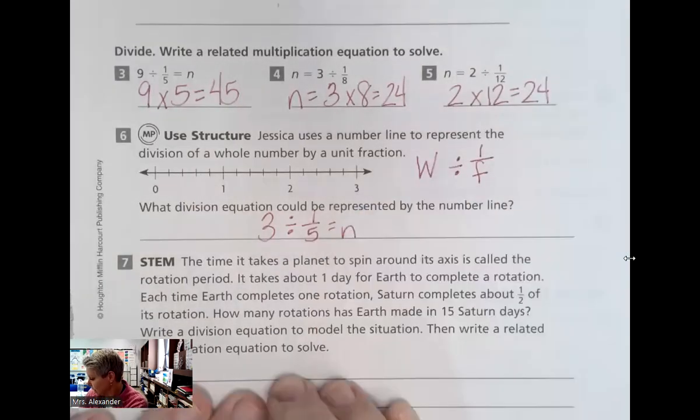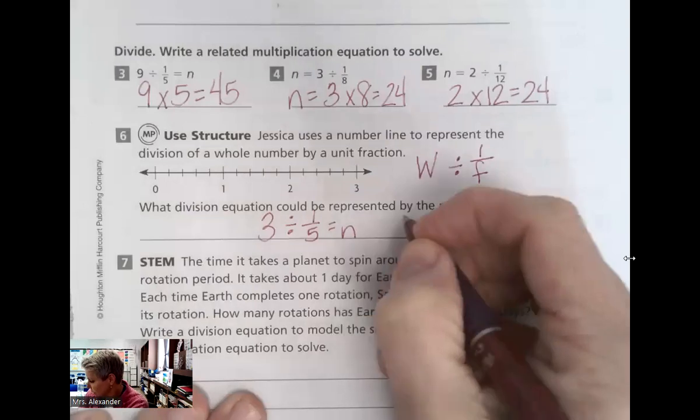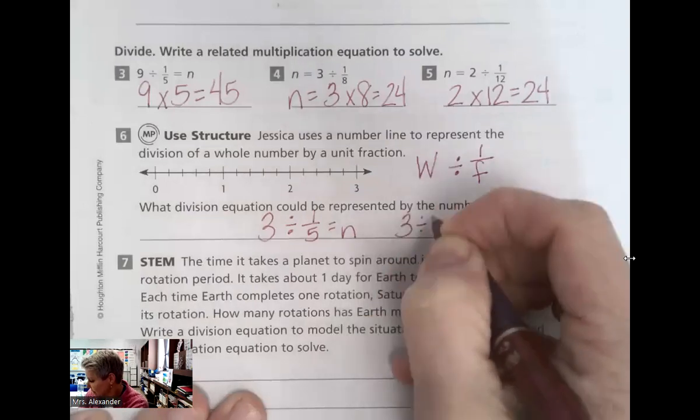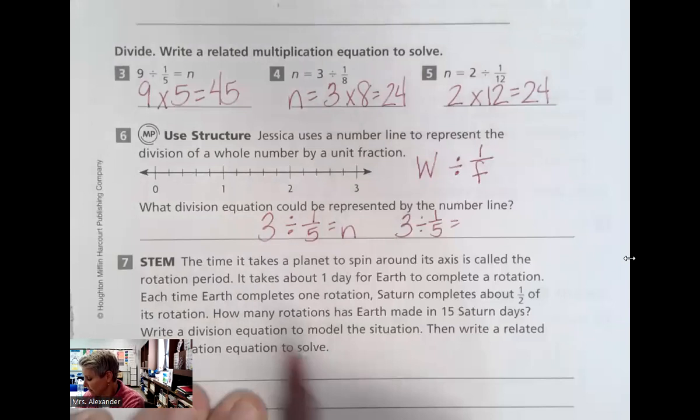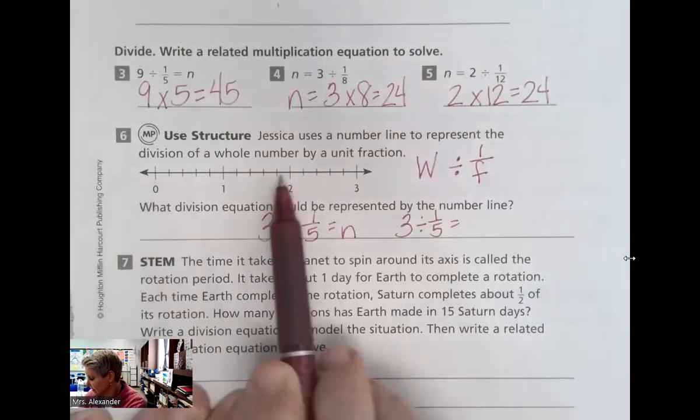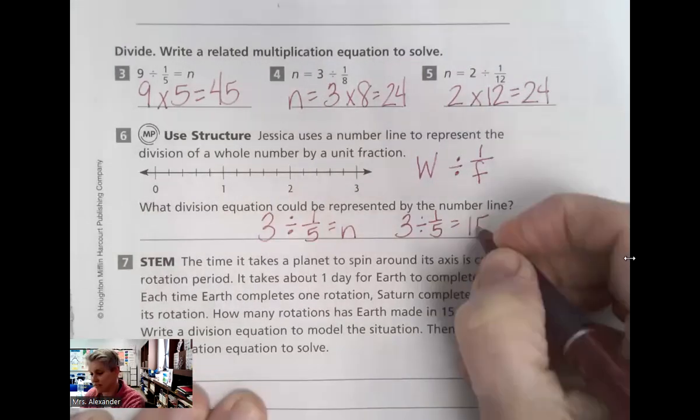Which would equal our answer, N. And then we could do three divided by one fifth equals, if each of them have five parts, five, ten, 15, N equals 15.